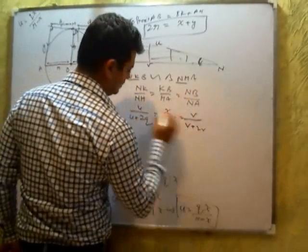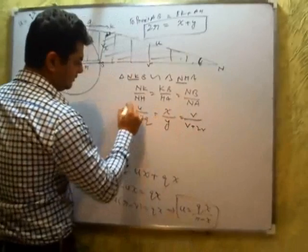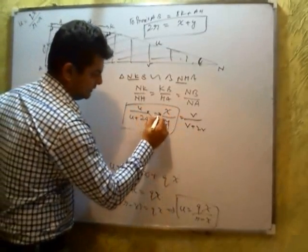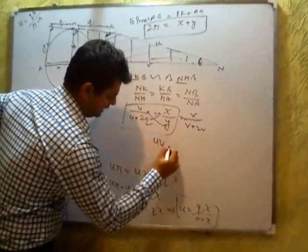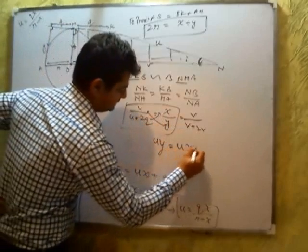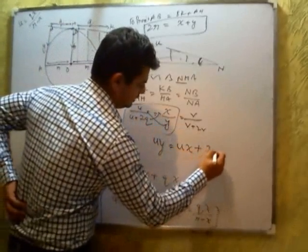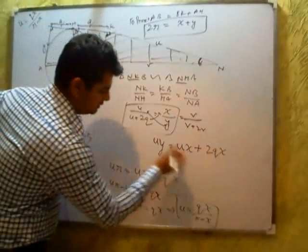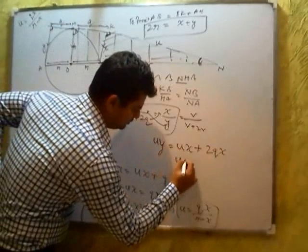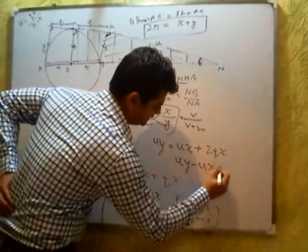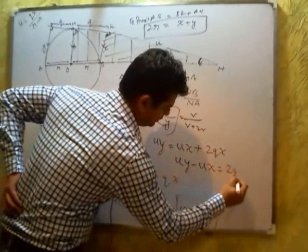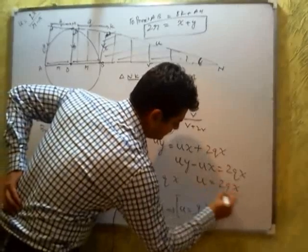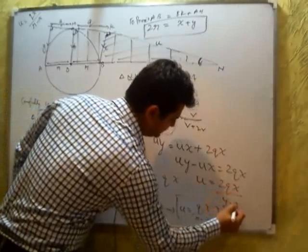NH is U plus 2R. If I am considering this, then I may land up with this result: U·Y equals U·X plus 2Q·X, that means U·Y minus U·X equals 2Q·X, so U equals 2Q·X upon (Y minus X).